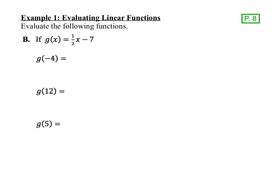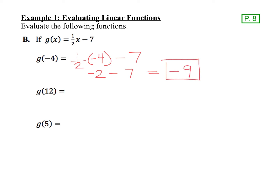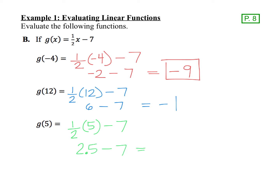Let's try one more linear function. This time, my function is g(x) = (1/2)x − 7, and we're going to evaluate it first at x = -4. I take my equation and sub in negative 4 for x. Half of negative 4 is negative 2, so negative 2 minus 7 makes negative 9. For g(12), we replace x with 12: half of 12 is 6, and 6 minus 7 is negative 1. For g(5), half of 5 is 2.5, and 2.5 minus 7 is negative 4.5.